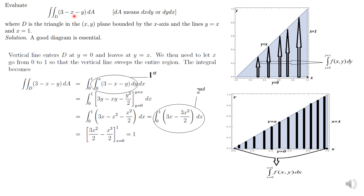The function we are integrating is 3 minus x minus y. I have not plotted the function here, and it is not required. If you wish to plot it, the function z equals 3 minus x minus y would come out of your computer screen, because the x-axis is here and the y-axis is here. Now, capital D is a triangle bounded by the x-axis (y = 0), the line y = x, and the line x = 1. So this triangular region is our region of integration.